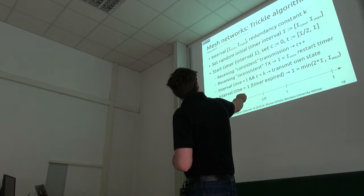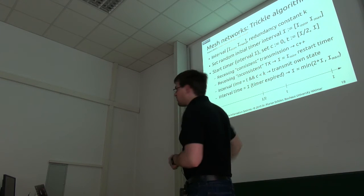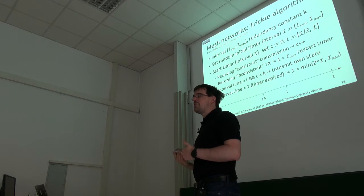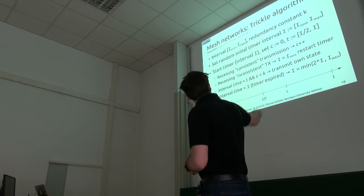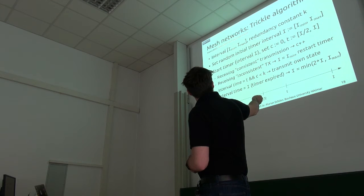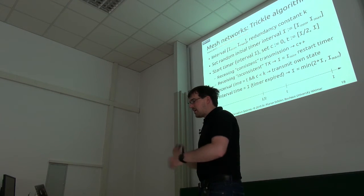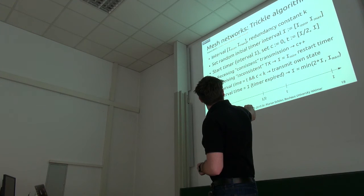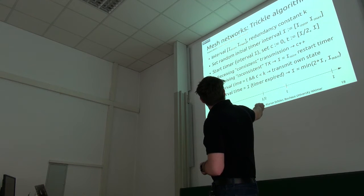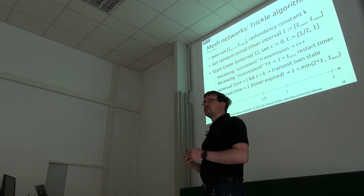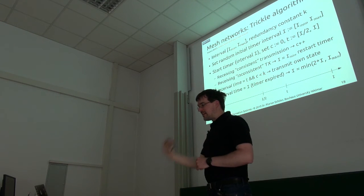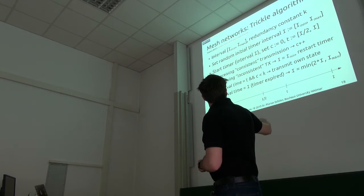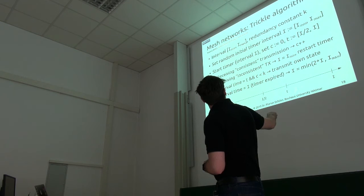And then the node in the first place just listens basically for incoming transmission. I also need a counter C. And every time I receive a consistent transmission, for example, that means with the same version of the data, which I already have, then I just increase that counter. When I'm getting an inconsistent transmission, then I reset the timer to the minimum time allowed and restart it. And when the timer reaches this time t, somewhere in the second half, and the number of consistent transmissions I've received is below the threshold, then I transmit my own state. Otherwise, when the timer has expired without me having to transmit, then I just increase the interval and start again.